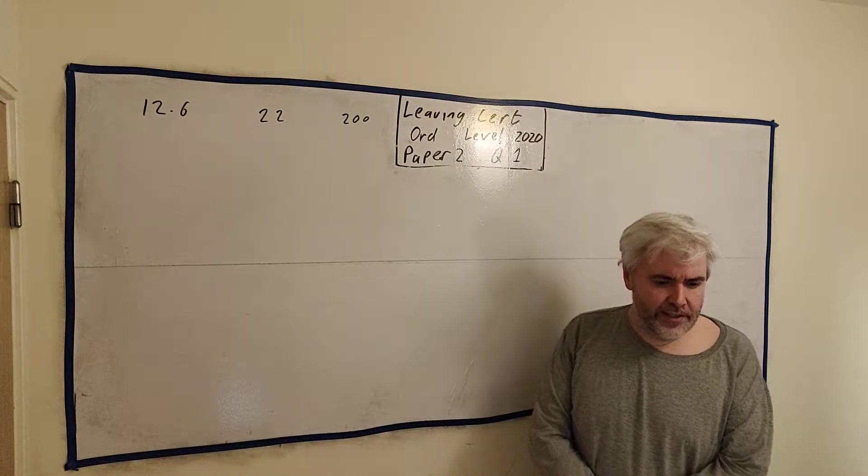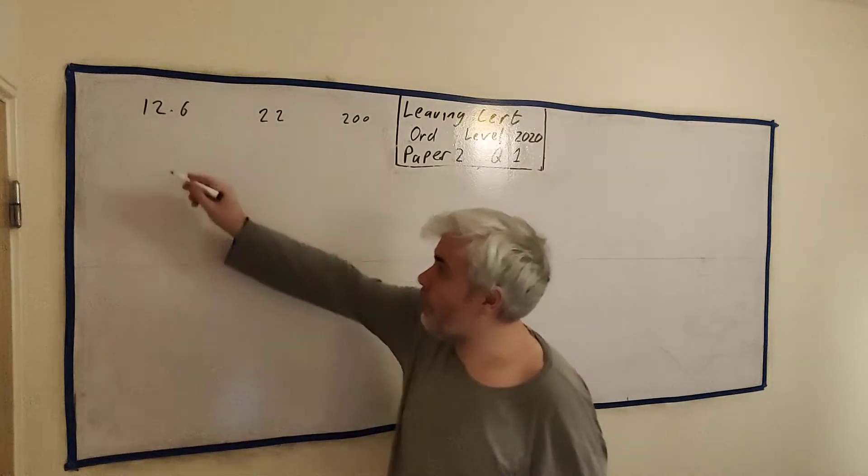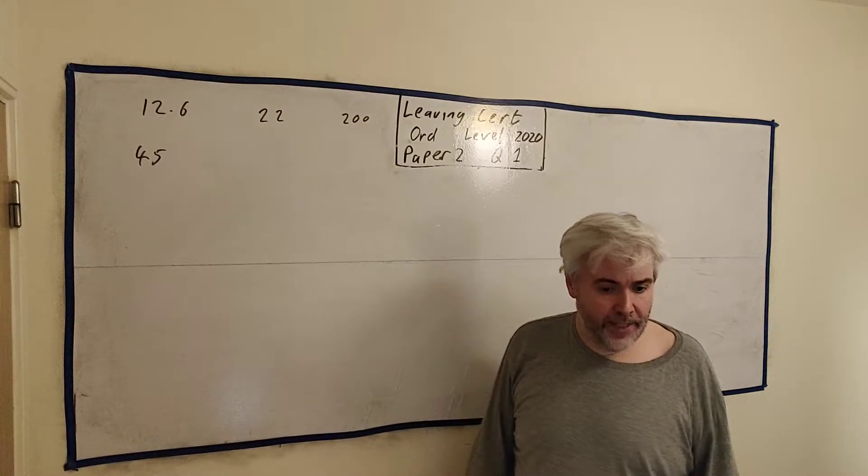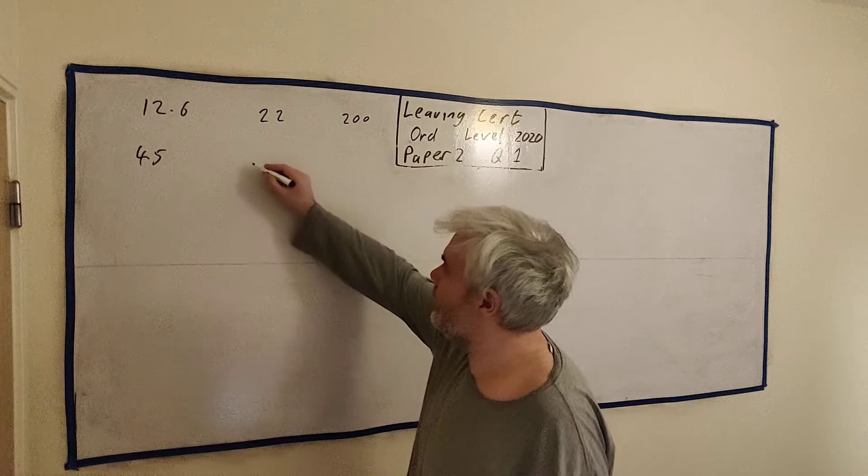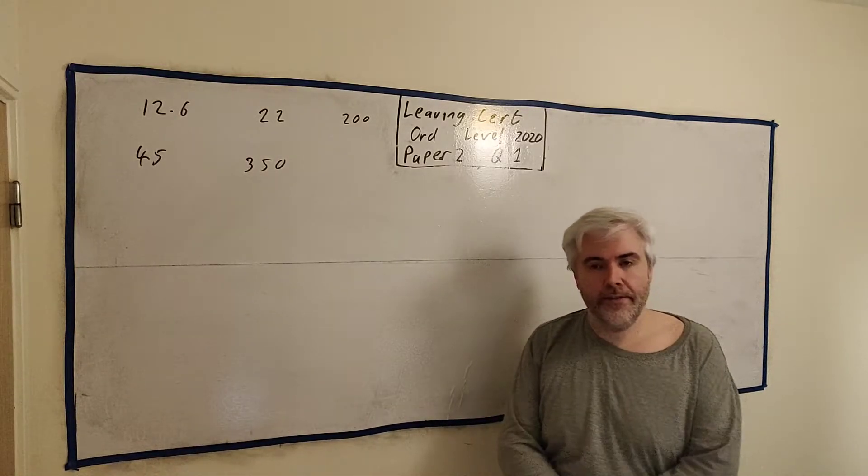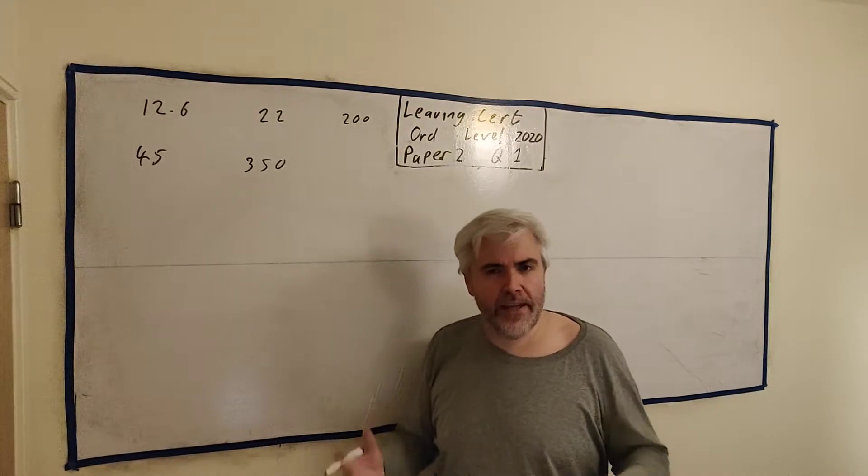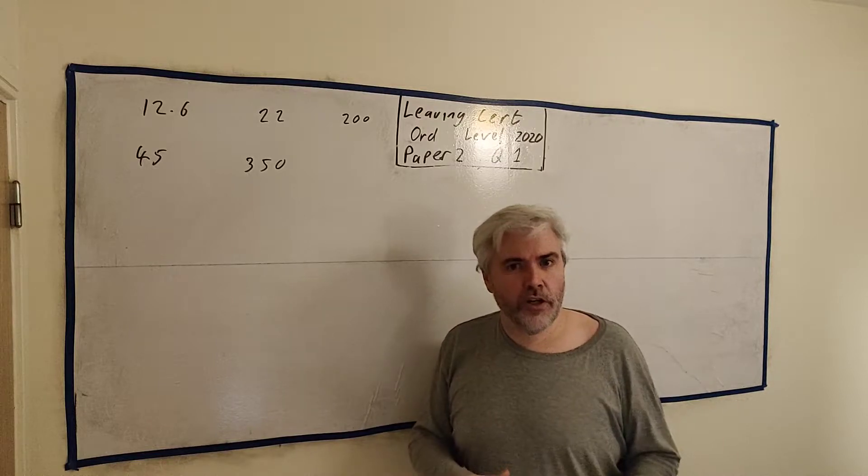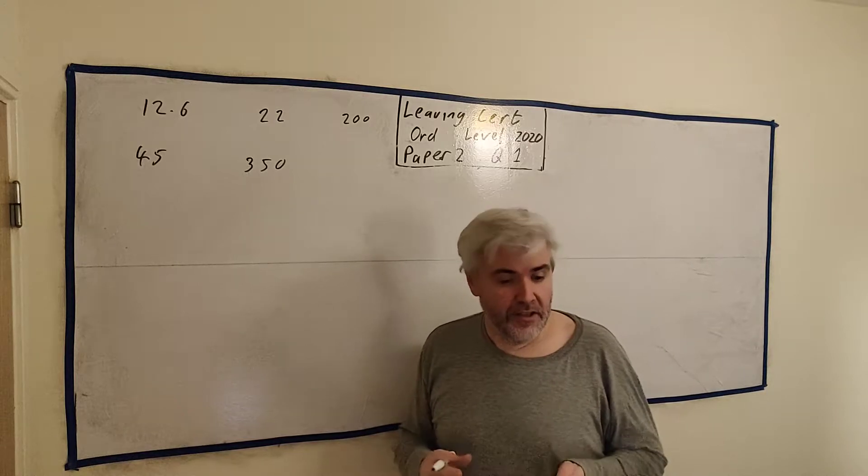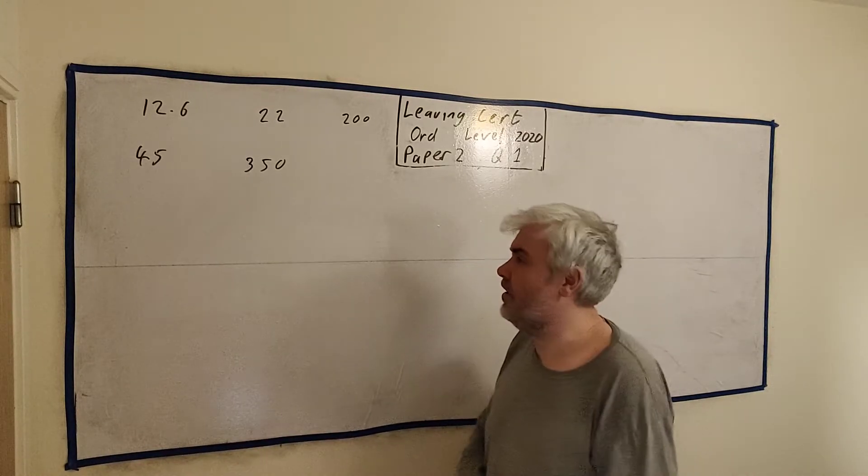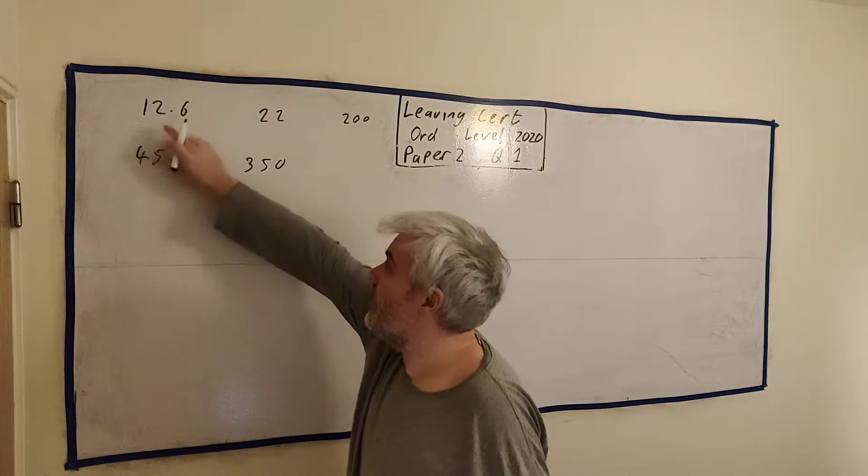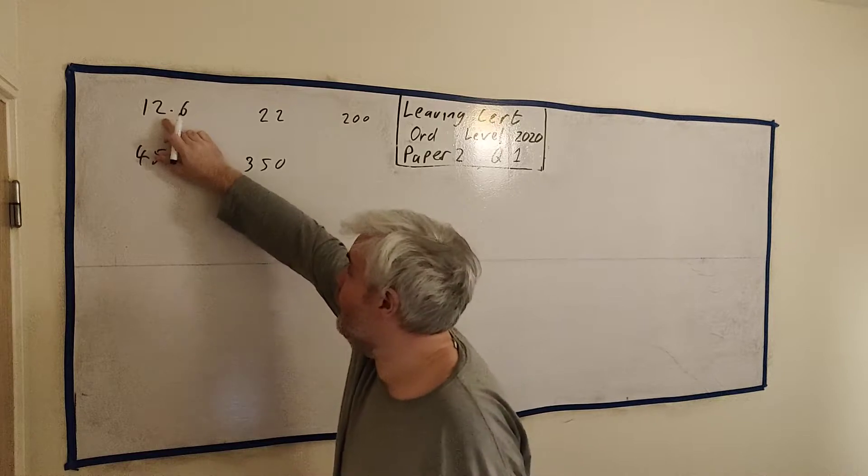The first question then asks, during a particular week John worked 45 hours at the basic rate and made sales amounting to €350. Find out how much his gross pay is. Lots of students get confused: which is gross pay and net pay? Well, they're giving you a clue here. Gross pay must be the one before tax because they haven't told us anything about tax. They're not going to try and trick you in the exam. So how much does he make? Well, he works 45 hours, he gets paid €12.60 an hour.